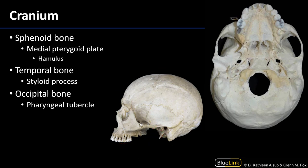Turning our attention to the cranium, we have two views of it. To the right is the inferior view of the base of the cranium, and to the left is a left lateral view. In the inferior view we can see the medial plate of the sphenoid bone, highlighted there, and at its inferiormost part we have the hamulus of the pterygoid, which is also just visible projecting in the lateral view.